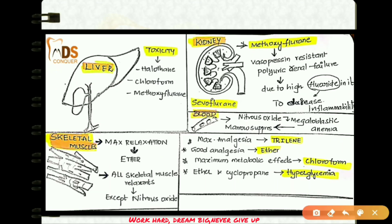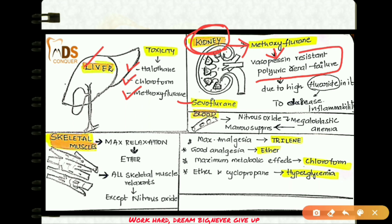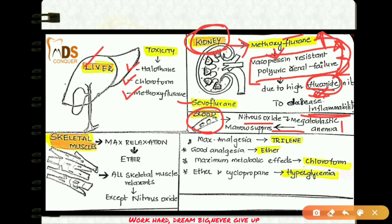Three inhalational drugs produce liver toxicity: halothane, chloroform, and methoxyflurane. Nephrotoxicity is caused by two drugs: methoxyflurane and sevoflurane. Methoxyflurane is associated with vasopressin-resistant polyuric renal failure because it has a high fluoride content. Fluoride was added to methoxyflurane because it is highly inflammable, and fluoride reduces its inflammability. Nitrous oxide can cause megaloblastic anemia and bone marrow suppression.